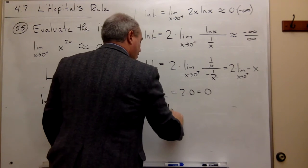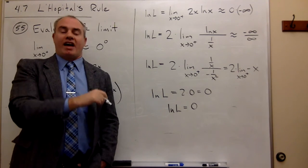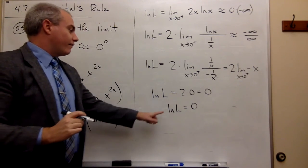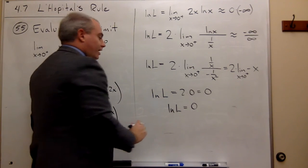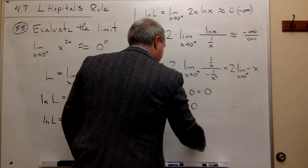So ln of L is 0. But I'm not trying to figure out what ln of L is, I'm trying to figure out what L is. So if the natural log of L is 0, then that would mean that e to the 0 power must be L.